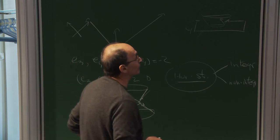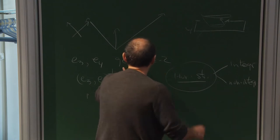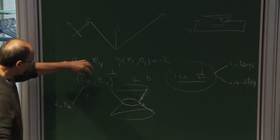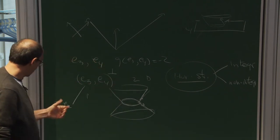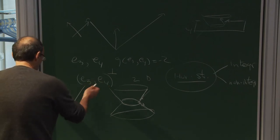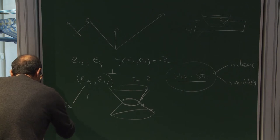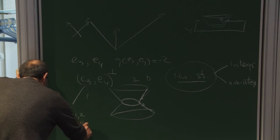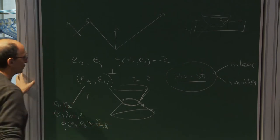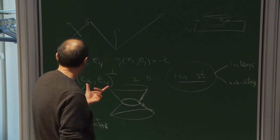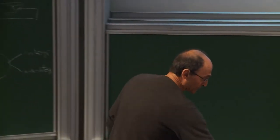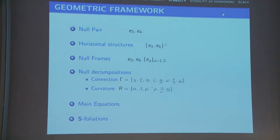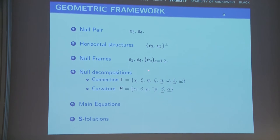Once you have this horizontal structure, you take vectors e1 and e2 perpendicular to e3 and e4, in the horizontal structure, with g(e_a, e_b) equal to delta_ab as normalization. This gives what is called a null frame: the pair e3, e4 and the horizontal vectors e_A.